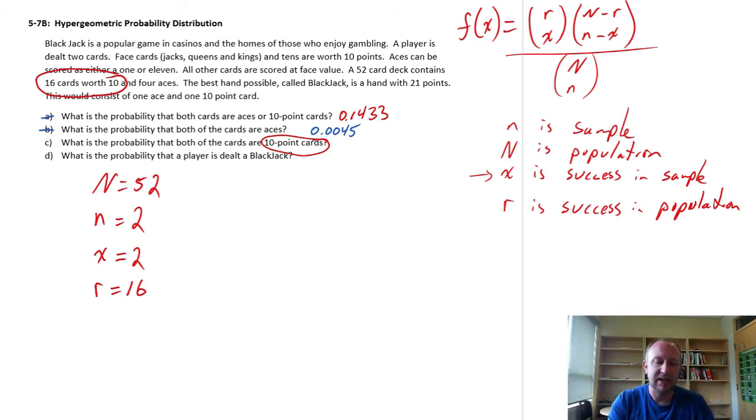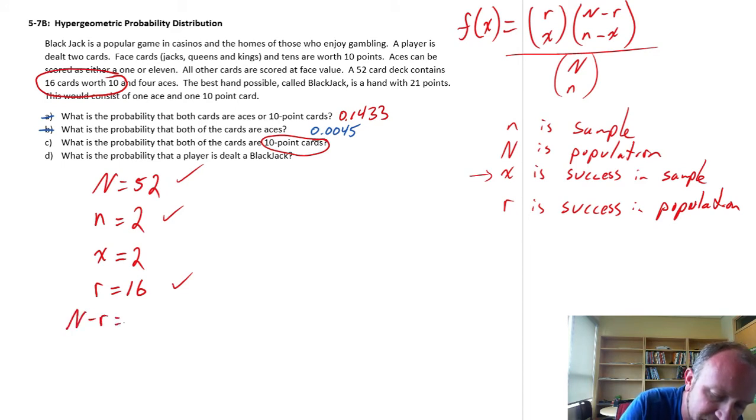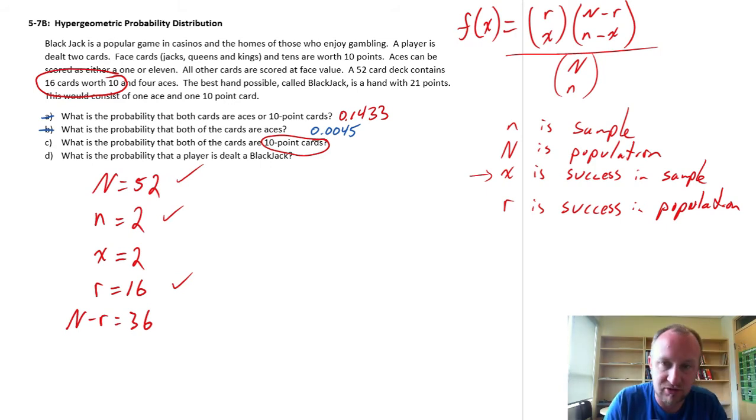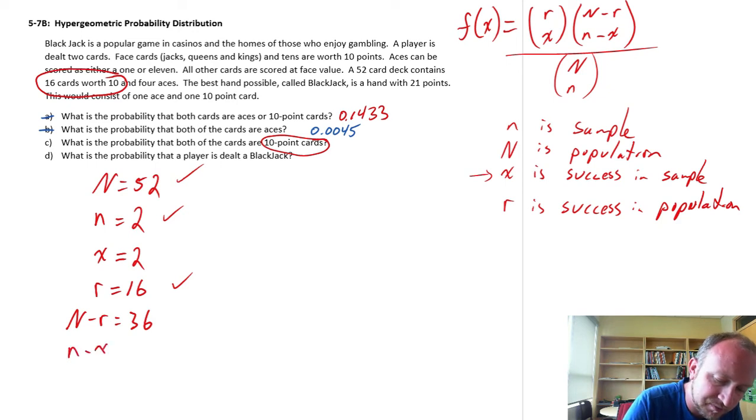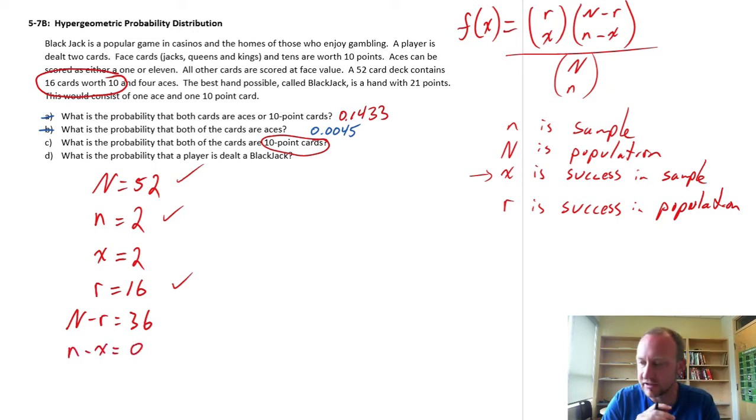So we're taking a sample of 2 from a population of 52. That population contains 16 successes, and therefore 36 failures, and my sample is 2 cards. I want both of those cards to be a success, so there are 0 failures in my sample. So once we've got our numbers all put together, we can put them into our formula.